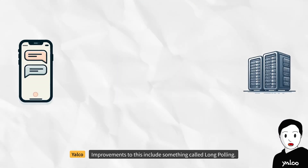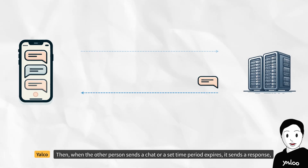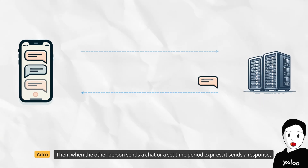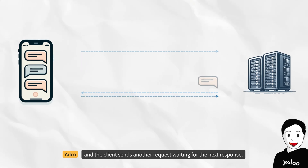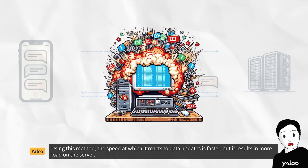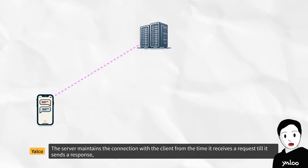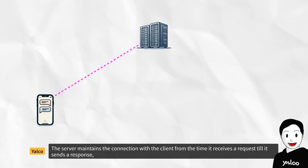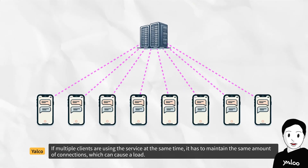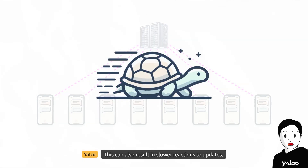Improvements to this include something called long polling. In long polling, the server does not immediately respond to the client's request but waits until an update occurs. Then, when the other person sends a chat or a set time period expires, it sends a response, and the client sends another request waiting for the next response. Using this method, the speed at which it reacts to data updates is faster, but it results in more load on the server. The server maintains the connection with the client from the time it receives a request till it sends a response. If multiple clients are using the service at the same time, it has to maintain the same amount of connections, which can cause a load. This can also result in slower reactions to updates.